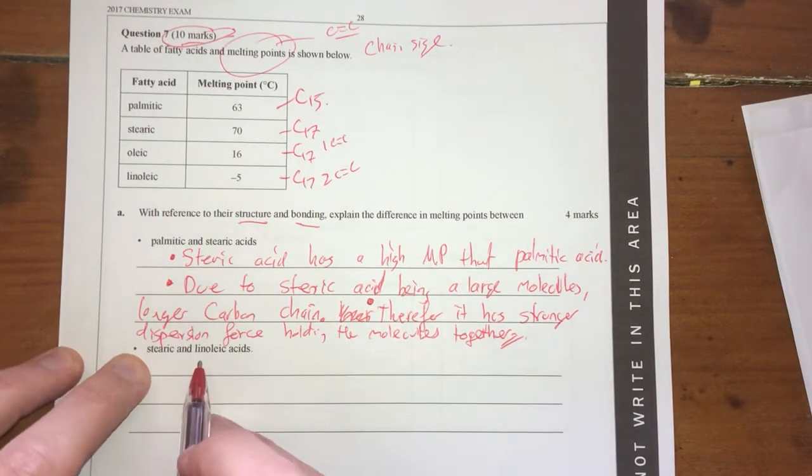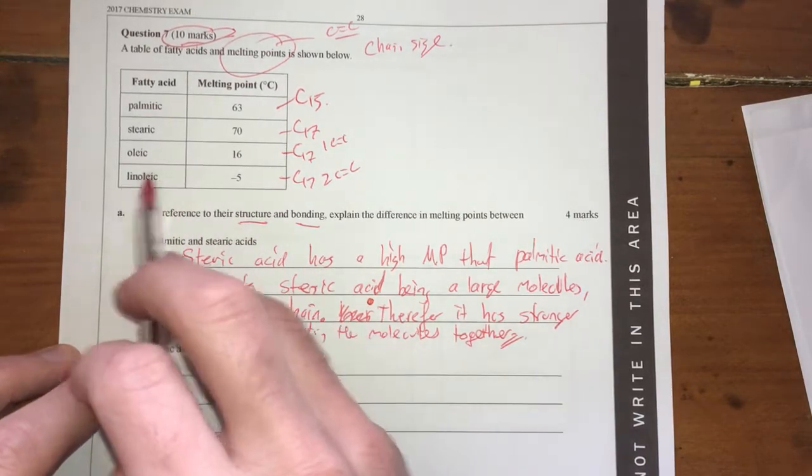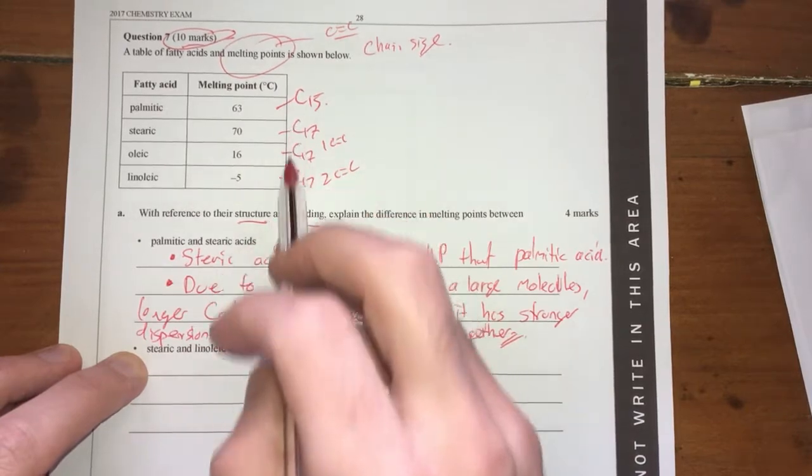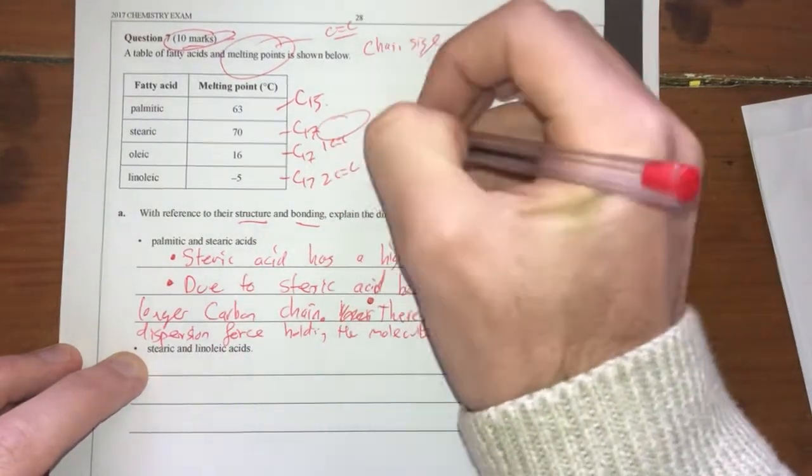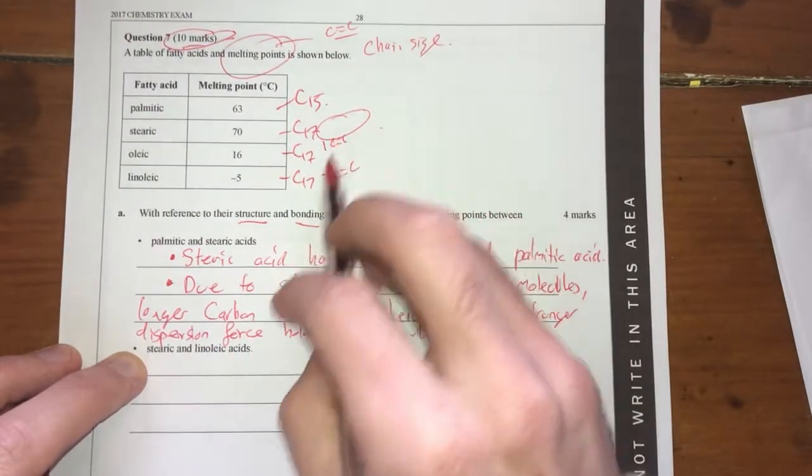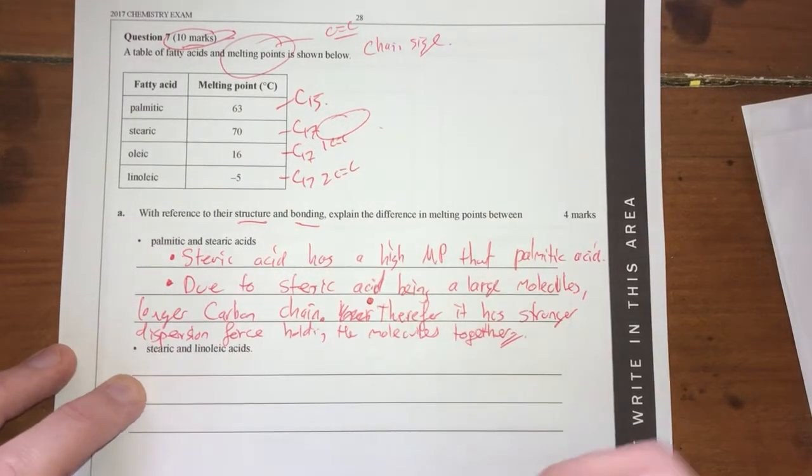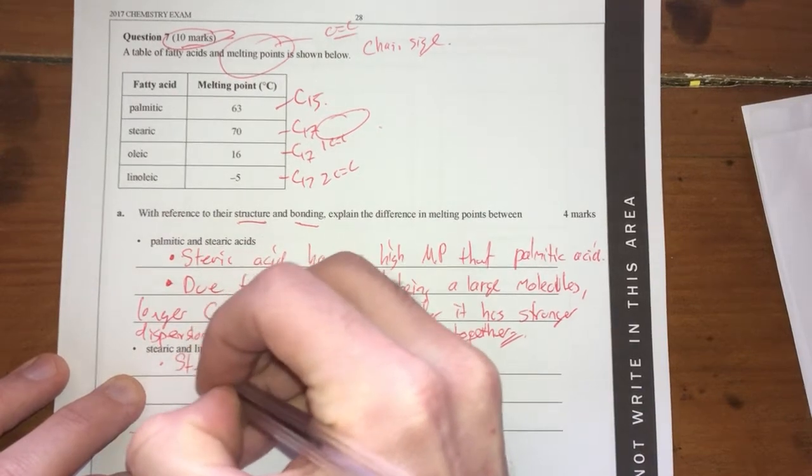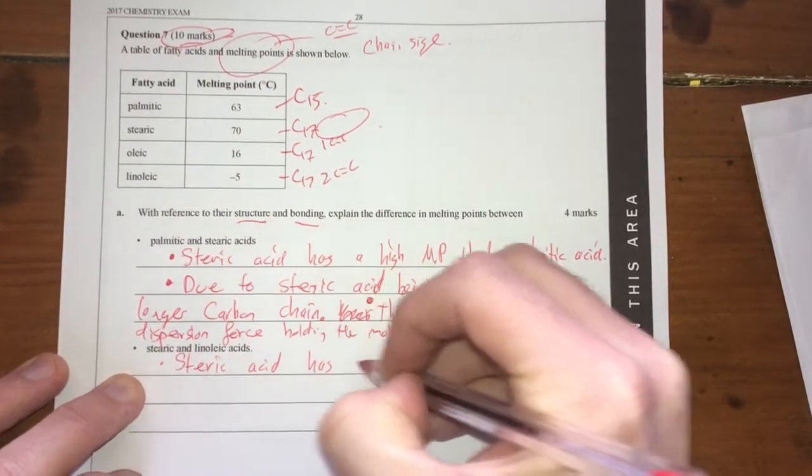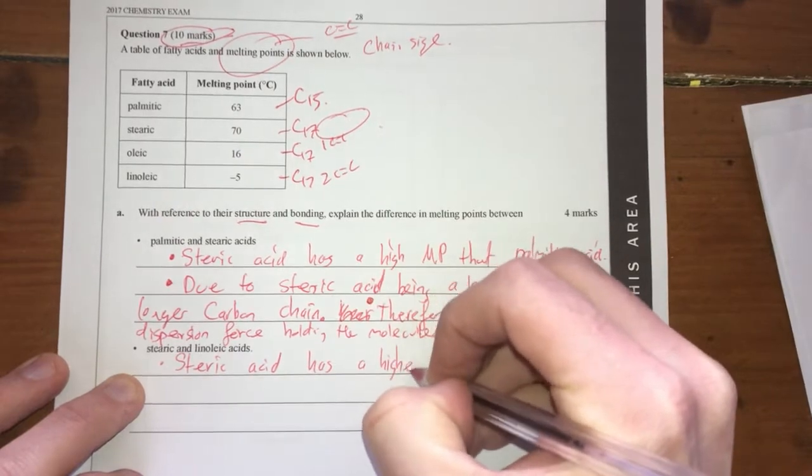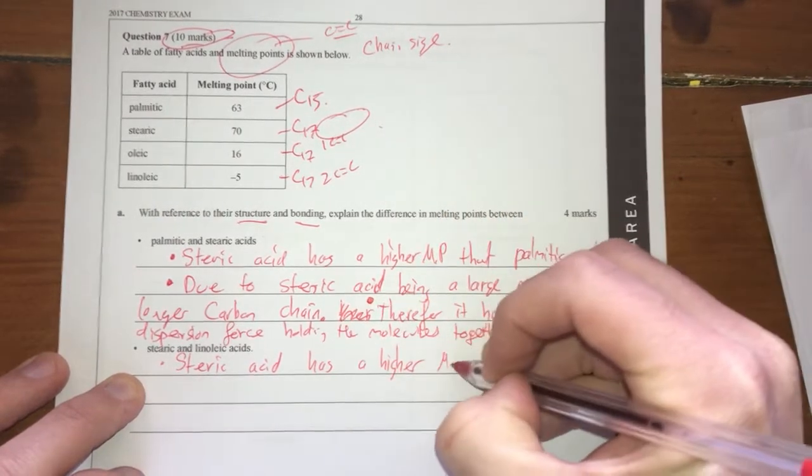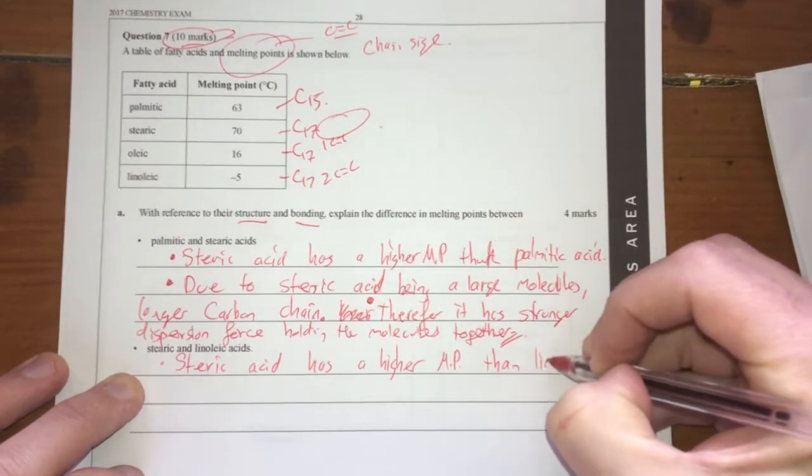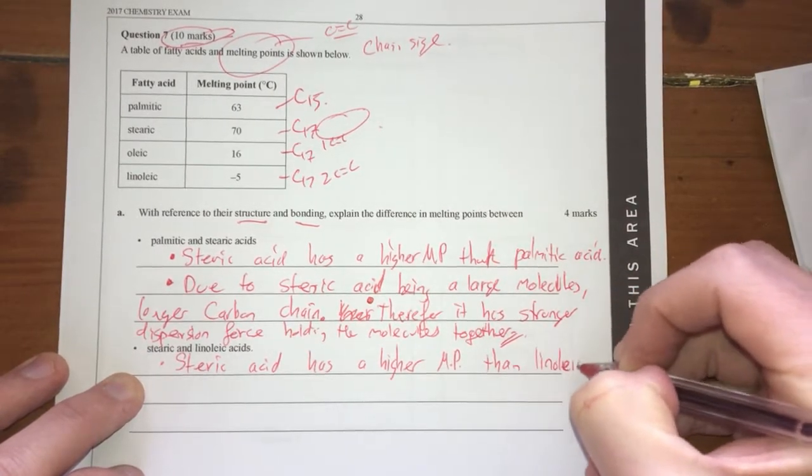Next one, stearic acid and linoleic acid. So therefore, we've got both the same carbon chain length, but the difference here is the fact that this one has no double bonds between carbons, and this one has two double bonds between carbons. So therefore, stearic acid has a higher melting point than linoleic acid.